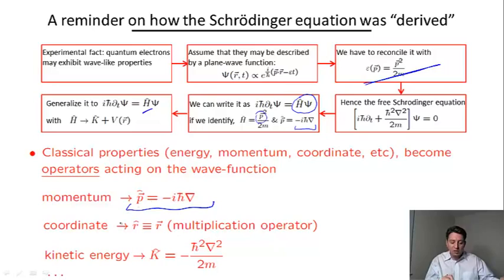The first is the momentum operator, -iℏ gradient. The minus sign is really a convention which must be consistent with the convention we choose to describe a plane wave. It could have been plus, but this is the convention we use.